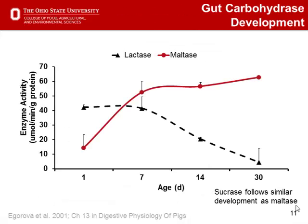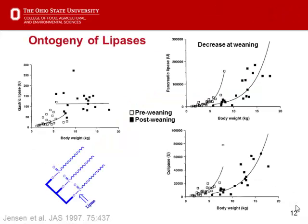As the GI tract develops, the nutrients in the diet change the ability to absorb those nutrients. Lactase is high at day one because they're suckling milk, but decreases over time, while maltase and sucrase become more utilized as they transition to dry diets. The same pattern is seen with lipases — gastric lipase levels increase pre-weaning then level out at weaning since they're no longer suckling milk, and then pancreatic and colipase changes occur to support absorption of nutrients in dry diets.